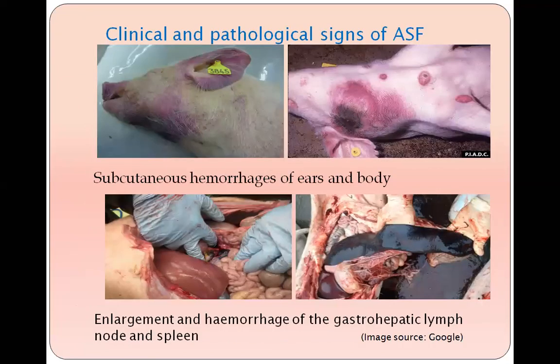This picture depicts the clinical signs. In the first picture, cyanosis of the ear and head region is seen. In the second picture, hemorrhages are seen. In the third picture, enlargement and hemorrhagic gastro-hepatic lymph nodes are shown. In the fourth picture, an enlarged and hemorrhagic spleen is shown.